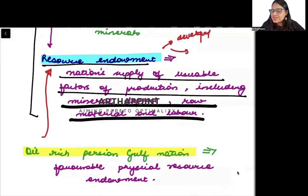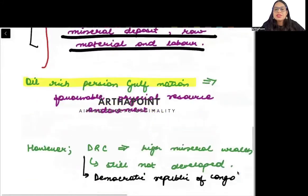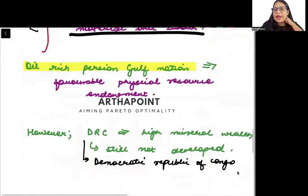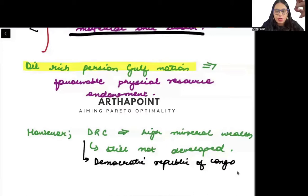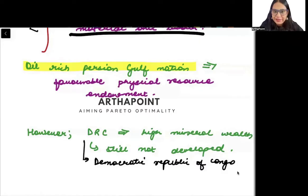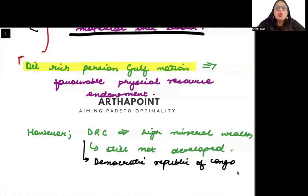Nations with less resource endowment will basically be developing or underdeveloped nations. For example, the oil-rich Persian Gulf nations — the OPEC countries — are wealthy because of the natural resources they possess, which is why their GDP is high.